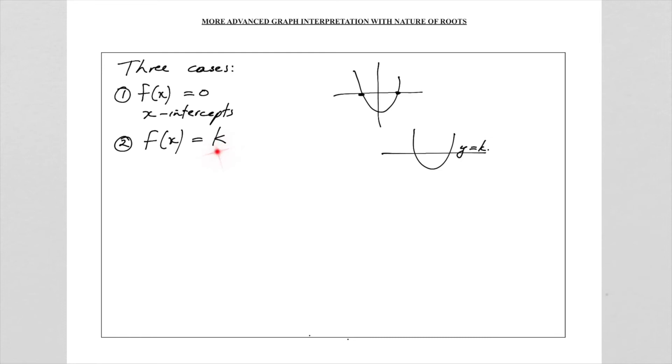And depending on the question, we're going to draw the horizontal line, either for two roots, or we're going to draw it on the turning point. That will give us only one root or one solution. Or when we draw it below the turning point, we will get no solutions or therefore no real roots.